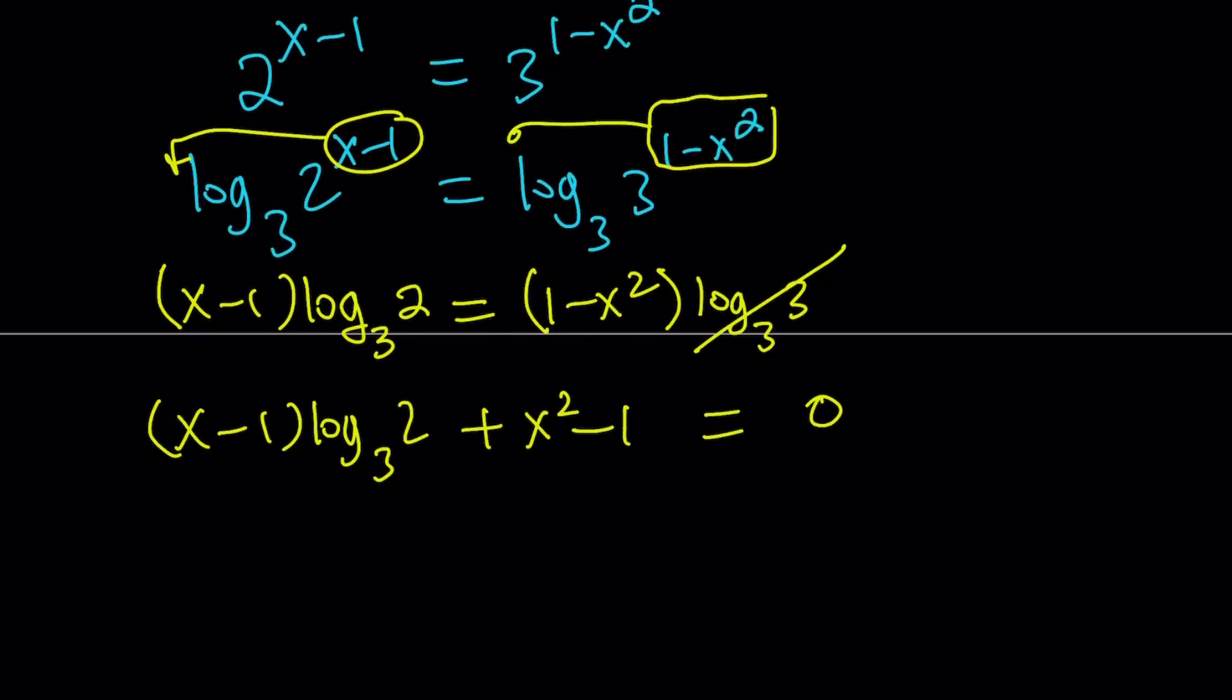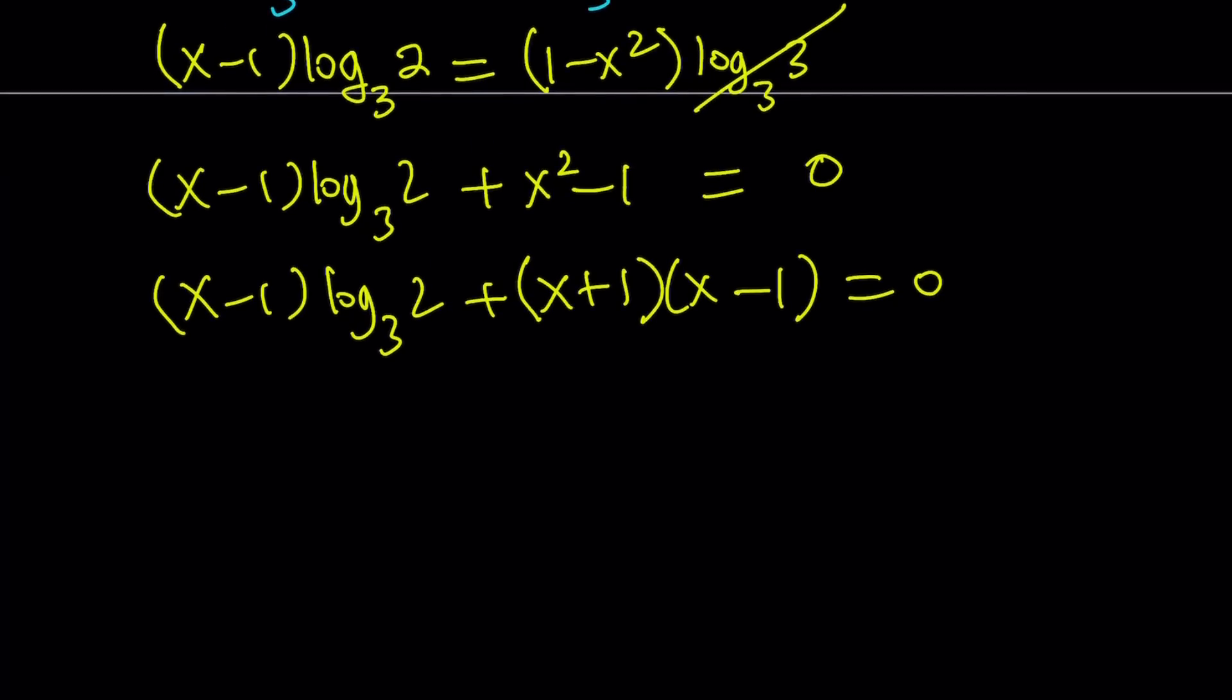Now, we're going to factor out something. We factor x² minus 1 using difference of two squares, which gives us a common factor of x minus 1. So now we can take out (x-1). Inside the parentheses, we have log base 3 of 2 plus x plus 1, and the whole thing equals 0.